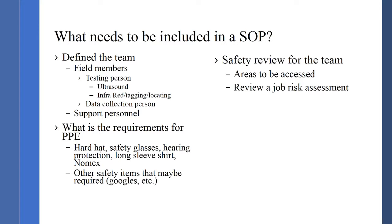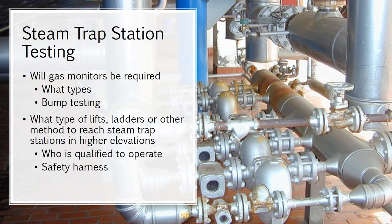Other devices that might be required: gas monitoring, such as H2S monitors. Bump testing the monitors — who's going to do that, and where will it be done? We also get into types of lift ladders and other methods to reach steam trap stations at higher elevations. The SOP will go through who's qualified to operate lift equipment and what type of safety harness they need, or whether the plant will provide the safety harness. All of that is part of the SOP for getting prepped for the steam trap assessment.